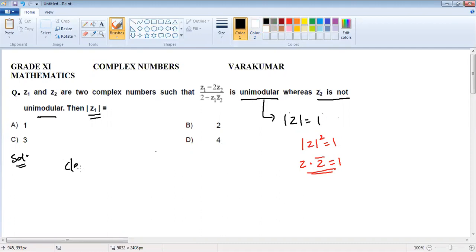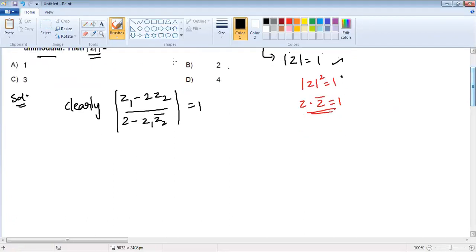See clearly what is given. Clearly (Z1 minus 2Z2) divided by (2 minus Z1 Z2 bar) is unimodular, so it equals 1 based on this concept. So if I apply the same concept...